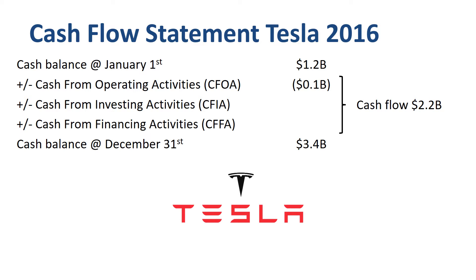In finance we put negative numbers between brackets. Cash from investing activities was an outflow of $1.4 billion. Cash from financing activities was an inflow of $3.7 billion. So that's the top level cash flow picture. Tesla attracted financing in the form of debt or equity, which allowed them to invest. Tesla ended the year with more cash than they started with, to continue investing and running everyday operations.